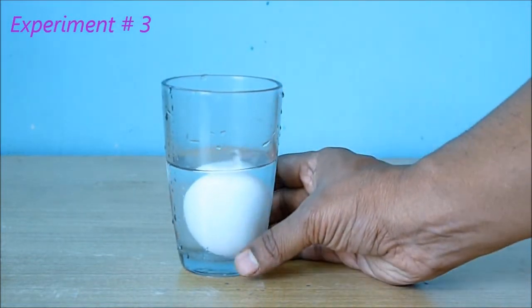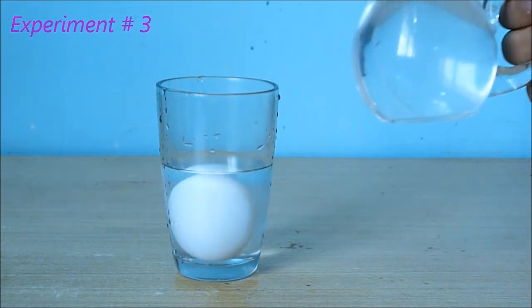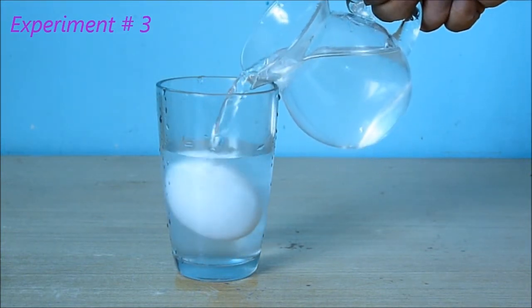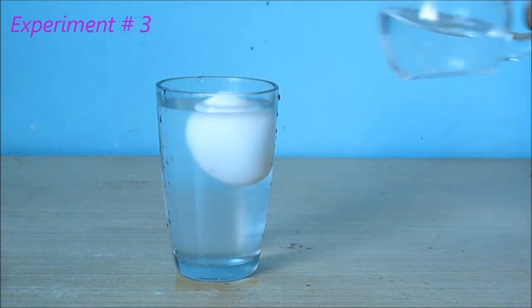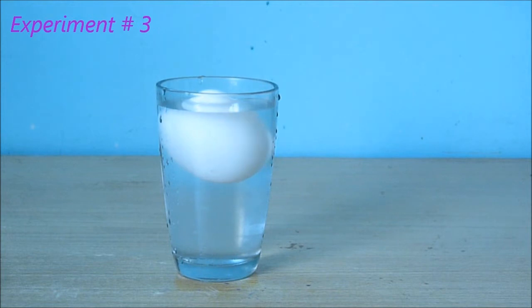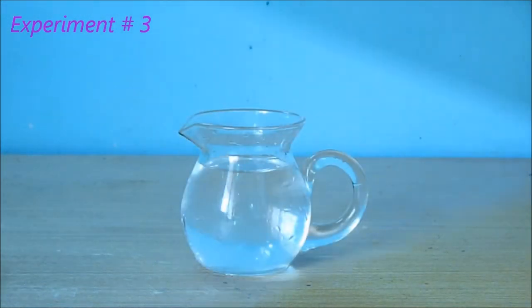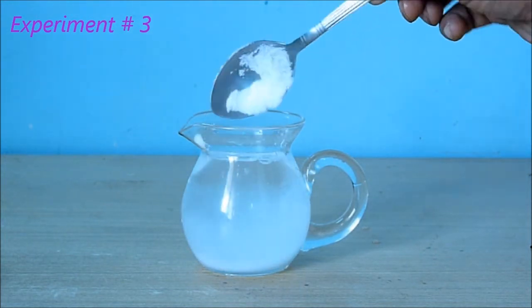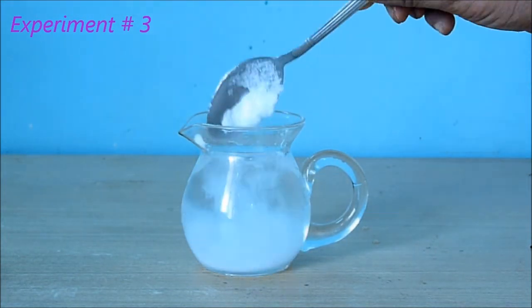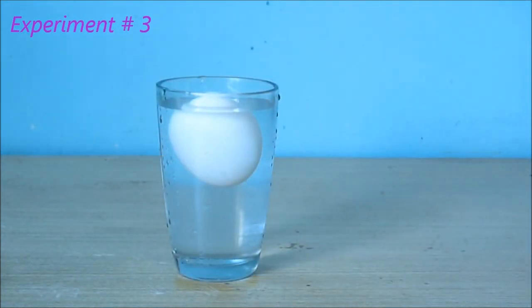Now add more water. Wow, it is floating! Now, what is the scientific trick behind it? It's not ordinary water. I have added a big tablespoon of salt into the water. Turn it well and add it. So this is salty water, much denser water than ordinary water. That's why the egg is floating now.